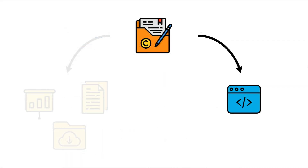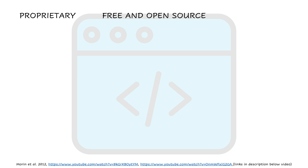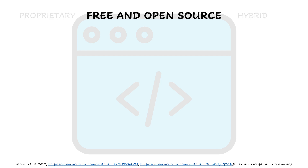Software licenses are a bit more complicated because of the large variability and the jargon, but bear with me and I hope things will be clear. Software licenses can be subdivided into three categories: proprietary, which are typical of commercial software and the ones we have to click 'I agree' on when installing; free and open source, which are very common among scientists; and hybrid, which are in between the two. In this video, we will focus on free and open source licenses.